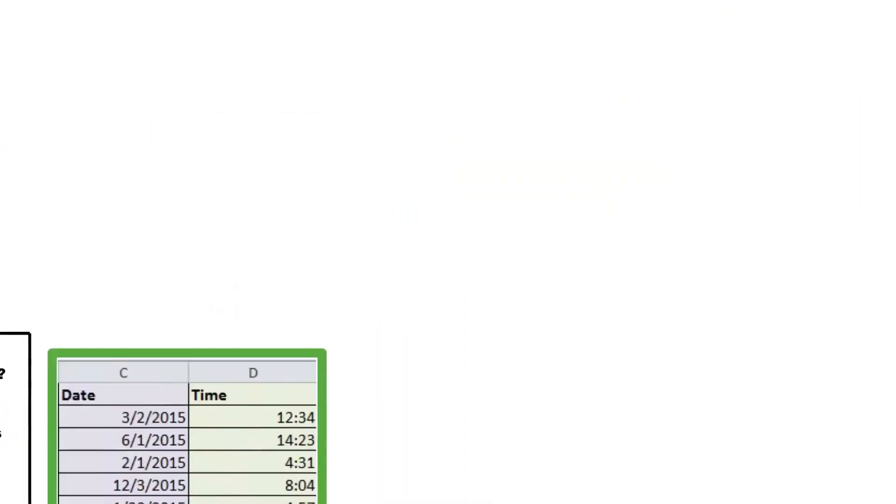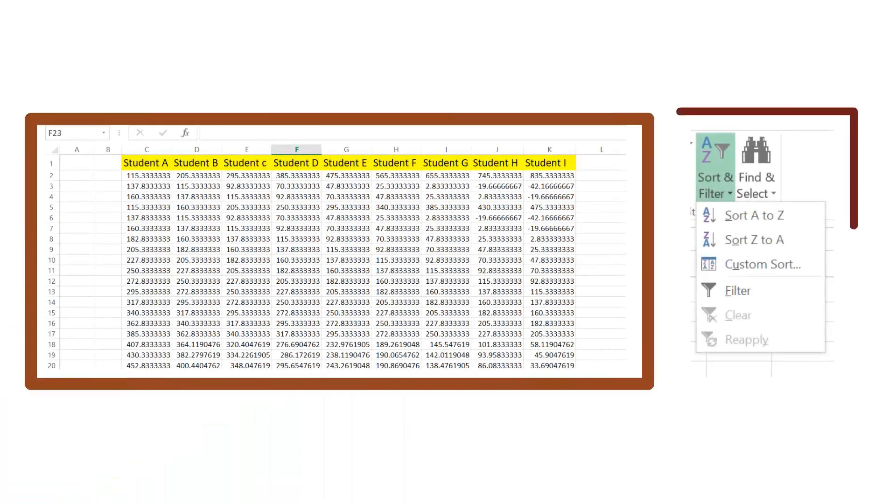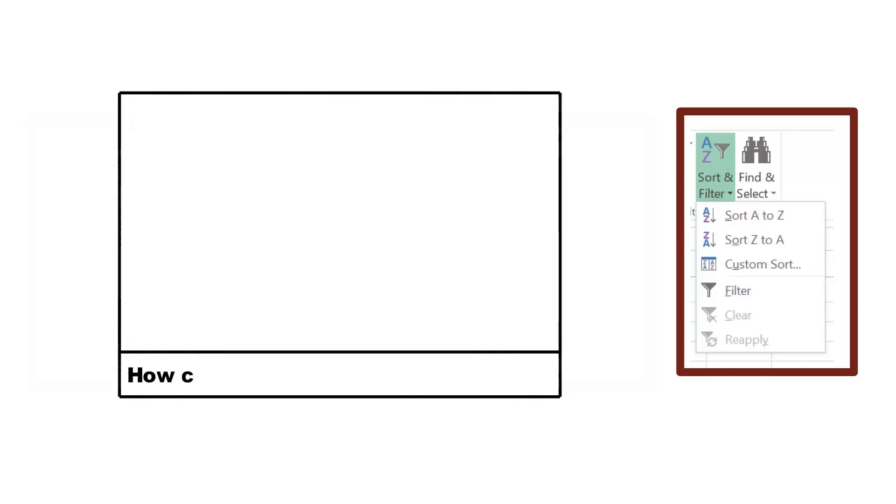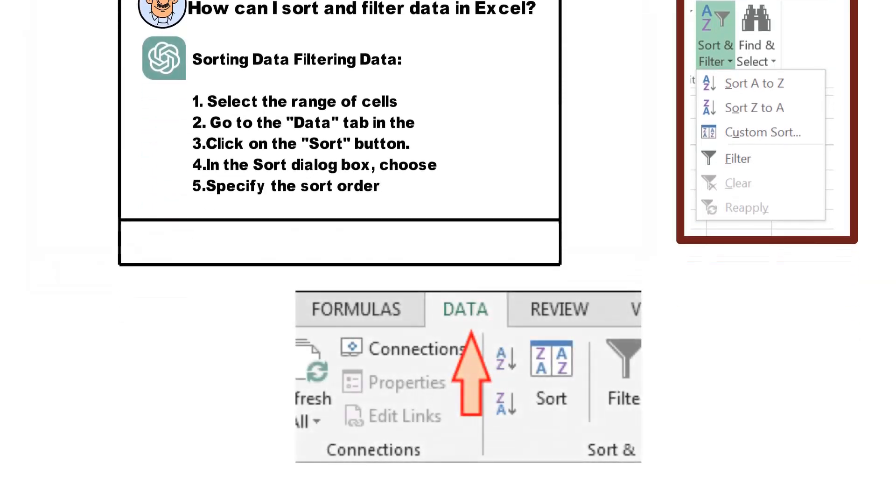In scenarios involving large data sets, you may need to sort or filter your data effectively. A relevant question would be, how can I sort and filter data in Excel? ChatGPT would guide you through the process, explaining how to use Excel's in-built sorting and filtering options located in the Data tab on the toolbar.